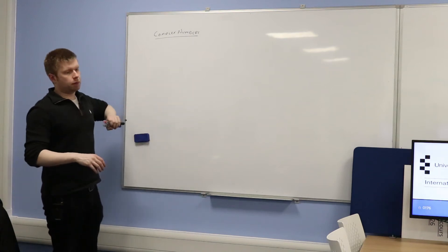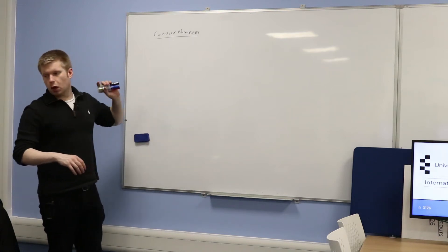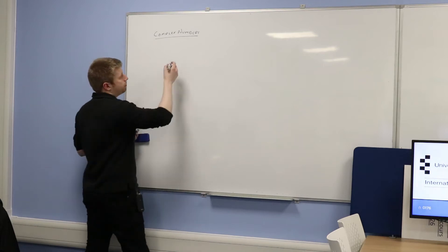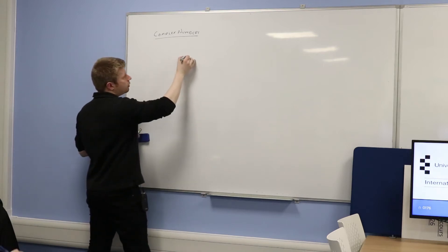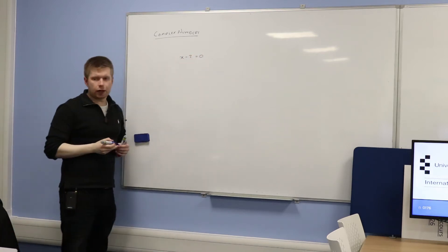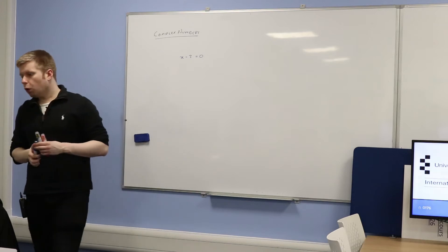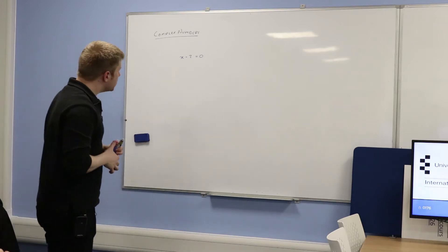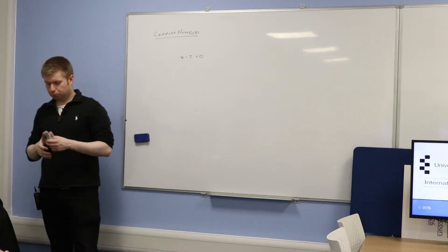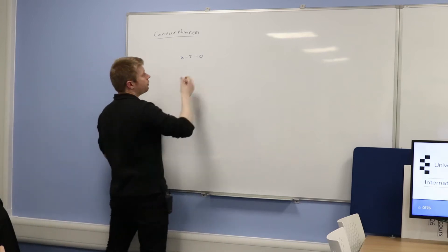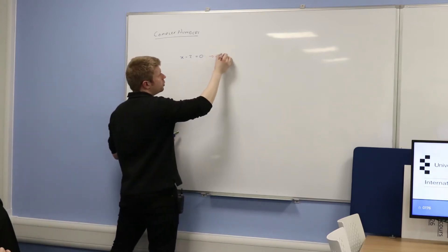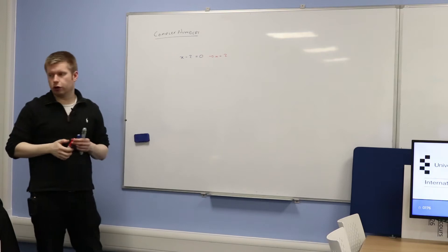Before we jump into complex numbers, what I want to do is give you a few equations. So let's look at, for example, x minus 2 equals 0. What would the solution to this equation be? x equals 2. So the solution would be x equals 2.